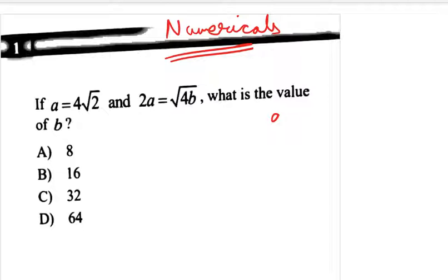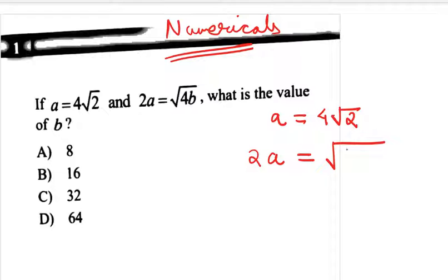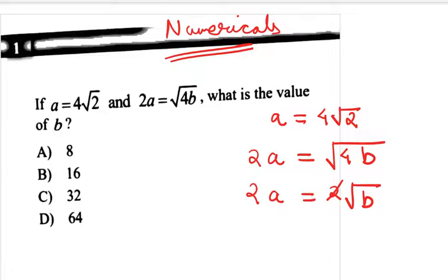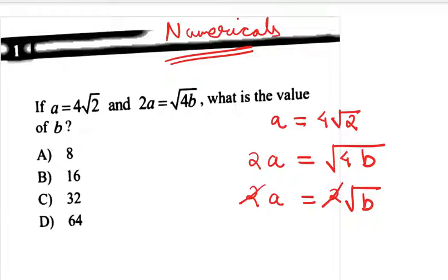The first thing given to us is a = 4√2. The second part is given as 2a = √(4b), which can be written as 2a = 2√b. Cancelling the 2 out, we get a = √b.